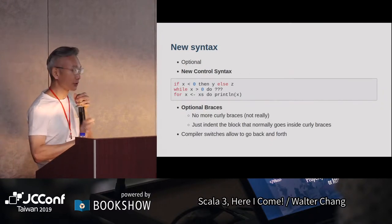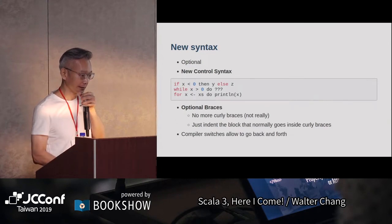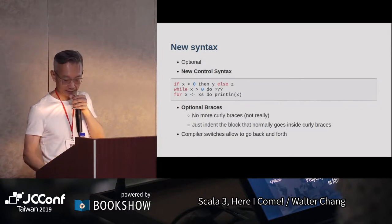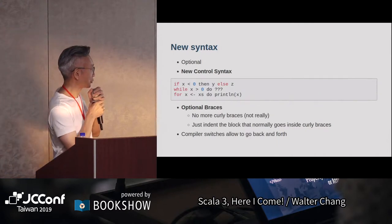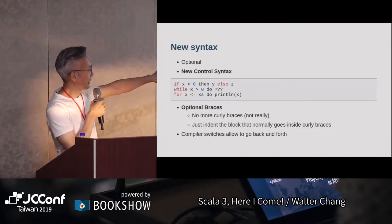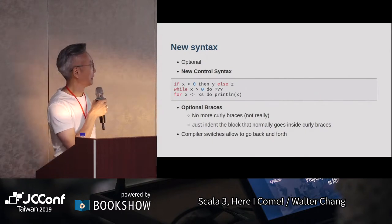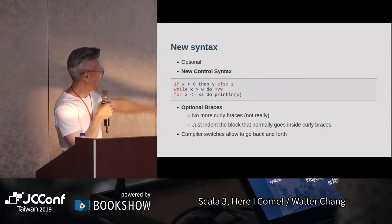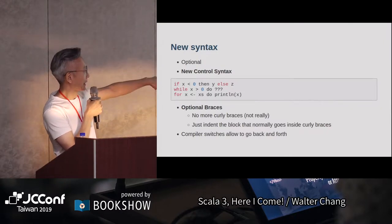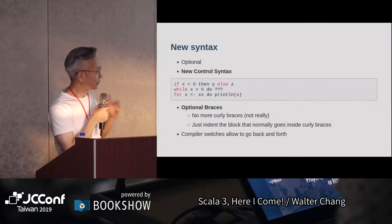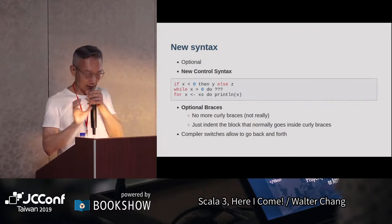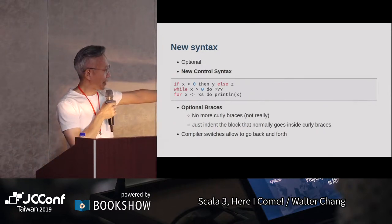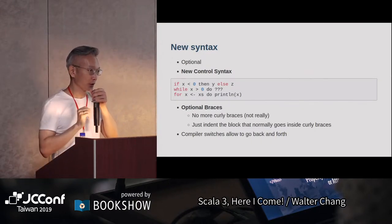Scala 3有一個新的syntax，第一個是optional的新control syntax。像if把括號拿掉了，多了一個then；while也是一樣把括號拿掉，後面要寫do；for loop外面的大括號也拿掉了，變成for do。另外有一個optional braces，就是說外面的大括號是optional的，只要裡面的code有indent就不需要brace。